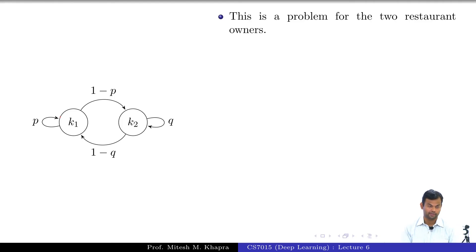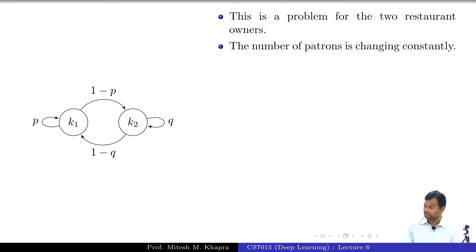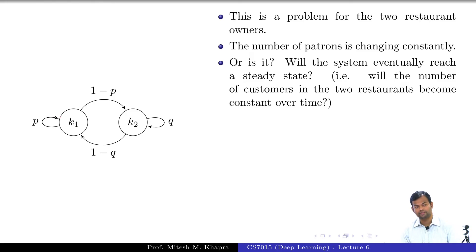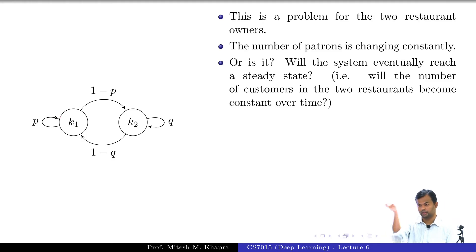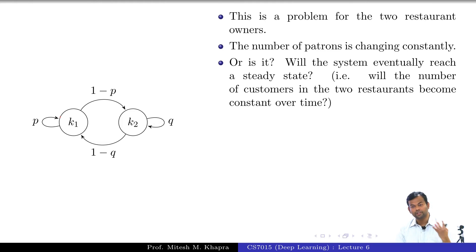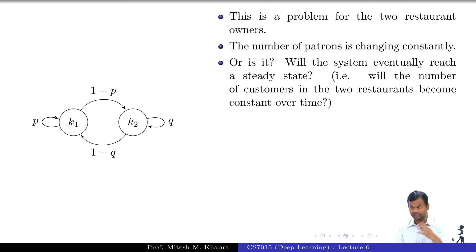This is a problem for restaurant owners — they don't know how much food to make because the number of customers changes every day. But will the system eventually reach a steady state? I don't see why it necessarily should. The only assumption is that the transition matrix M is constant across all time steps — every day the same fractions govern the changes. Turns out it will reach a steady state — let's see how.